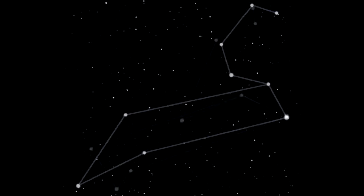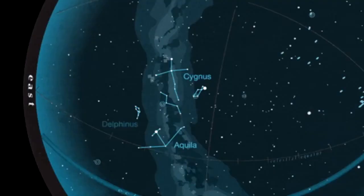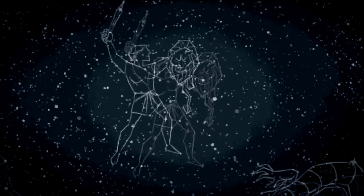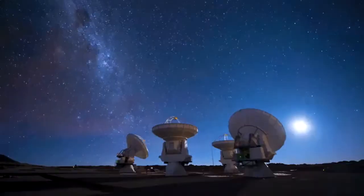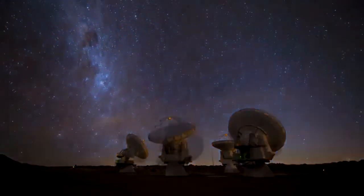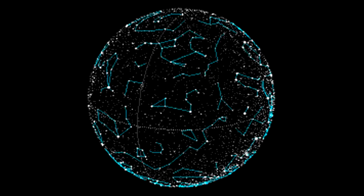Spelling number one. Spell the word constellation. A constellation is a group of stars that appears to form a pattern or picture. Example: modern astronomers divide the sky into 88 constellations with defined boundaries.